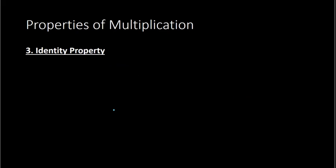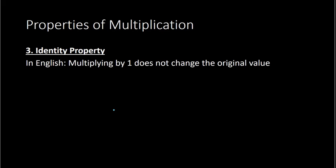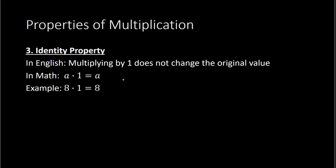Next we have what is called the identity property. The identity property for multiplication says that there's a number we can multiply by that does not change the identity of the original number, and that number is 1. So you can multiply by 1 and that does not change the original value. In math notation, a times 1 equals a. With actual numbers, 8 times 1 is equal to 8 because multiplying by 1 does not change the original identity or value.